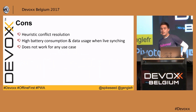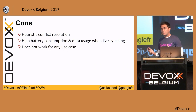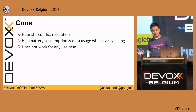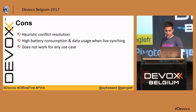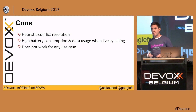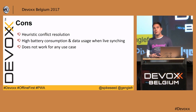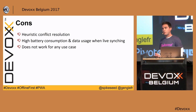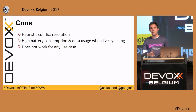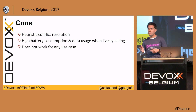To conclude the talk, I've prepared a basic pros and cons analysis of the combination of Pouch and Couch. The negative aspects are mainly linked to the default conflict resolution mechanism of CouchDB, which is heuristic — and according to me, a bit cheap. If you really want a production application using this solution, you'd better write your own conflict resolution mechanism. Fortunately, CouchDB will keep both revisions whenever there is a conflict, so you will be able to manage which one should be merged and which one should take precedence.